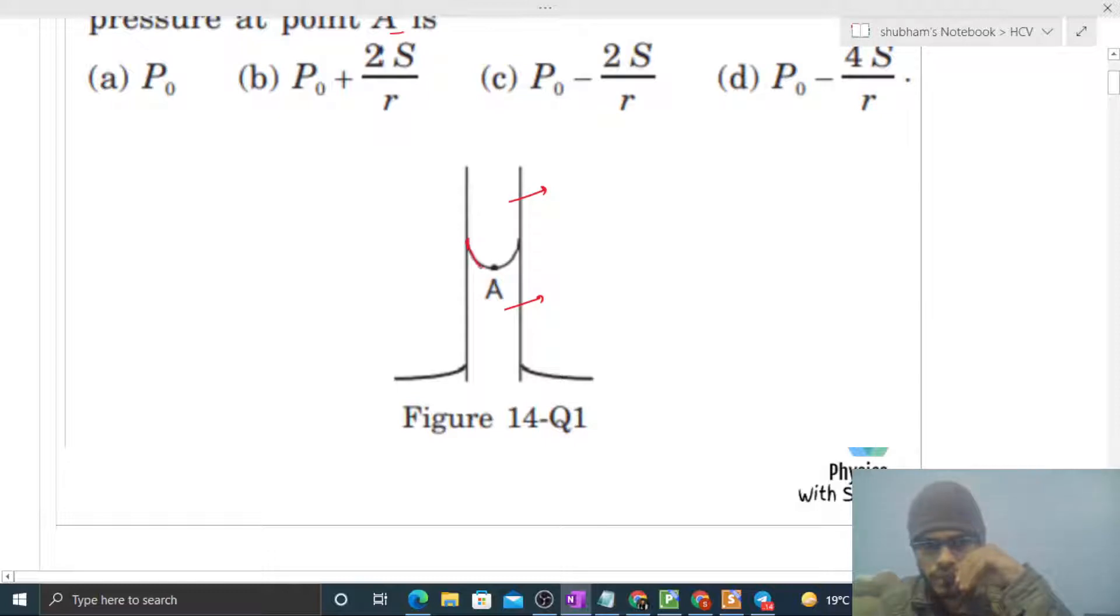And when we cross a spherical meniscus, the pressure difference is equal to 2T divided by r, right? Two times surface tension divided by radius of the meniscus.